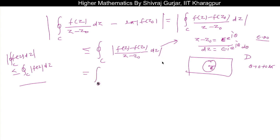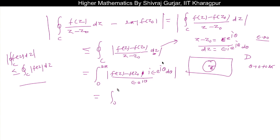After parameterization, the integral becomes the integral from 0 to 2π of |f(z) minus f(z₀)| times |iε·e^(iθ)| dθ, divided by |ε·e^(iθ)|. The moduli cancel, leaving the integral from 0 to 2π of |f(z) minus f(z₀)| dθ.